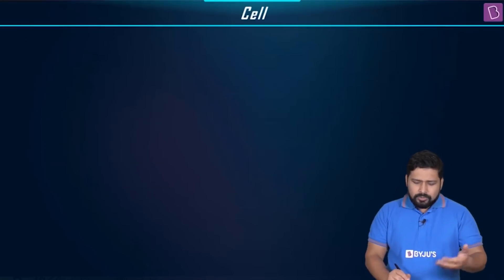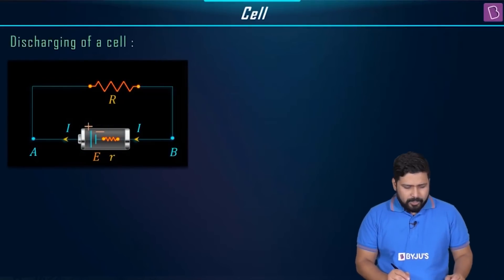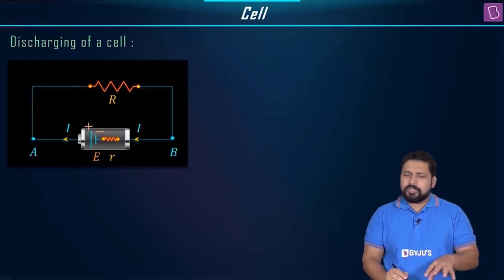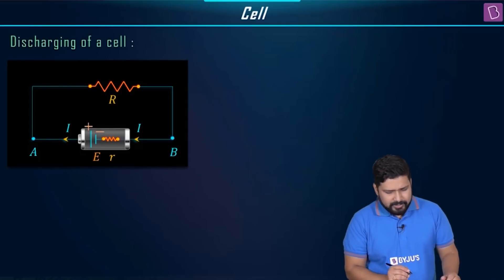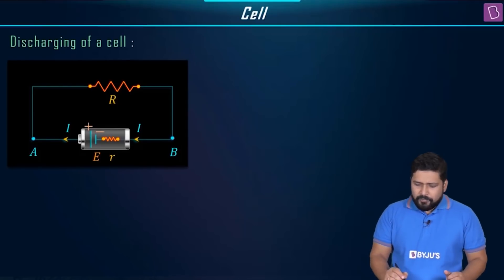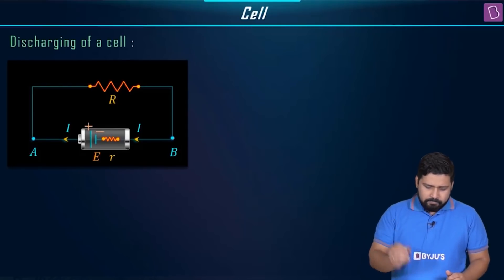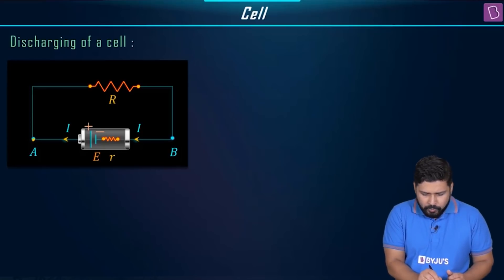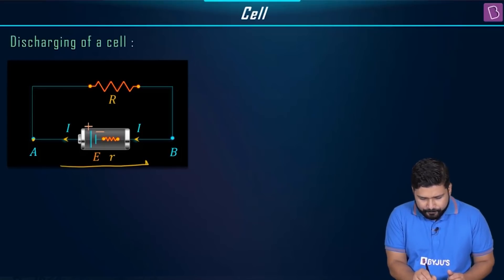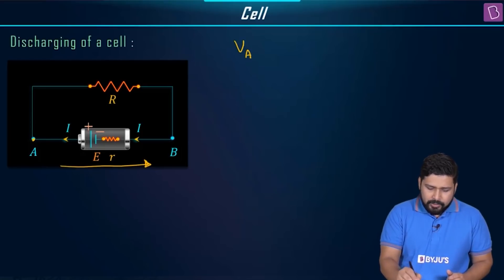Now let's do justice to the proof using Kirchhoff's rule. Let's talk about discharging of a cell. If I apply Kirchhoff's rule starting from point A, coming towards B, I can write V_A.